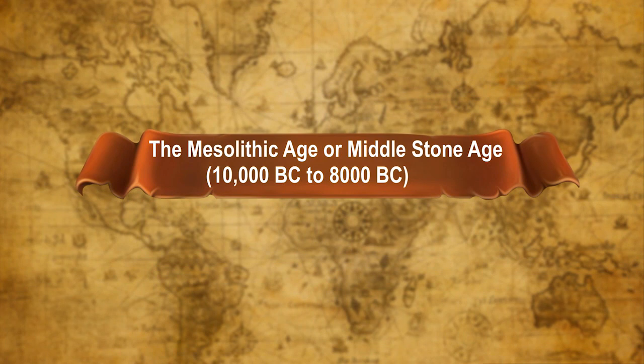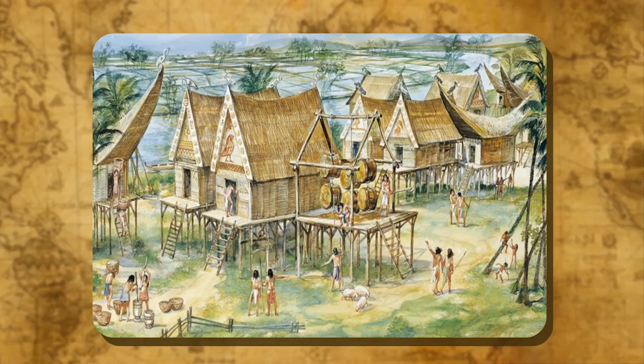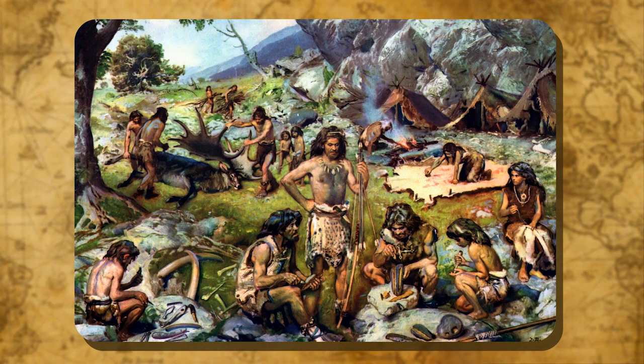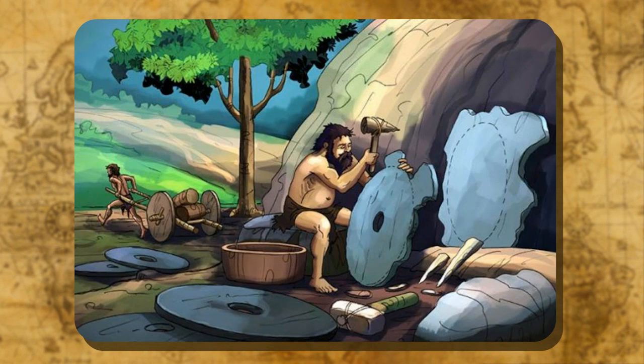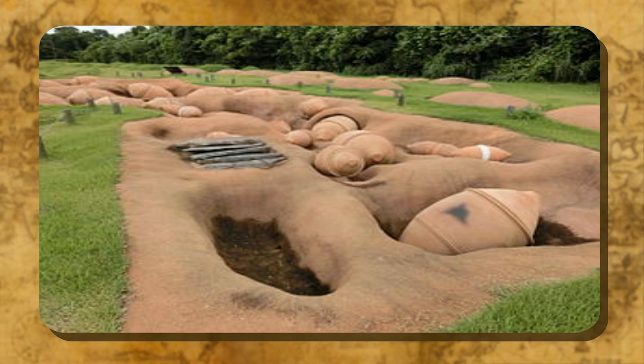At the end of the Paleolithic Age, man moved closer to water sources like rivers and lakes. He entered the period of the Mesolithic Age or Middle Stone Age. This age was a transition period for Paleolithic man. Mostly, the features of the Old Stone Age continued, but there were some new developments: domestication of animals, improvement in tools, art of painting, and burial system.